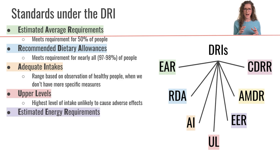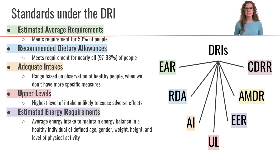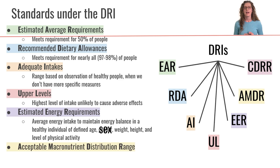There are a few other standards under the DRI we haven't discussed yet. The first is the Estimated Energy Requirements, or EERs, which are especially relevant for our macronutrients course. EERs represent the average energy intake to maintain energy balance in a healthy individual of a defined age, gender, weight, height, and level of physical activity. Also very relevant are the Acceptable Macronutrient Distribution Ranges, or AMDRs, which we'll define in more detail shortly.